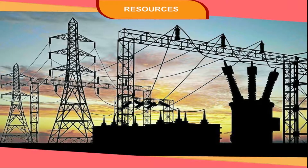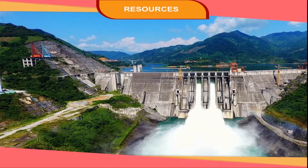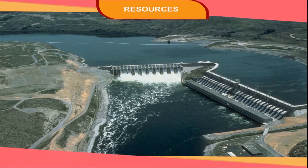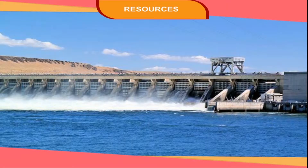Some other categories of resources are mentioned here. Developed resources are those which are actually in use. For example, River Sutlej has been tamed, power projects have been set up on it, and electricity is being generated. So, this has become a developed resource.